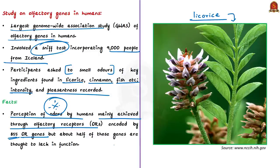About half of the olfactory receptor genes in people are thought to lack functioning, leaving humans with the ability to use only about 400 such genes. The reason humans have lost so many olfactory receptor genes has remained mysterious.